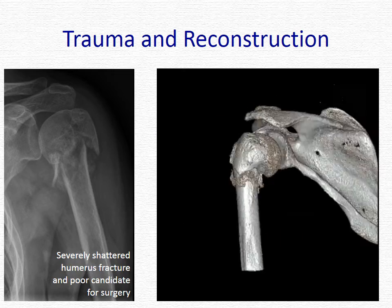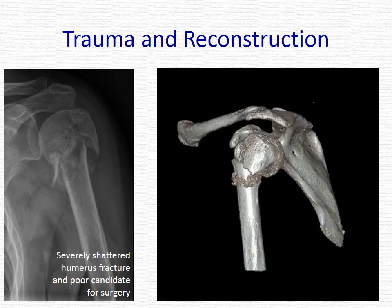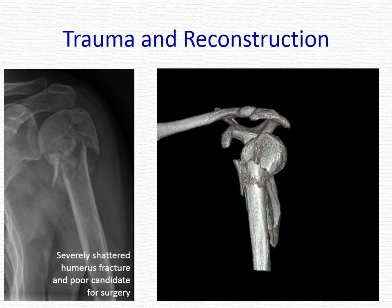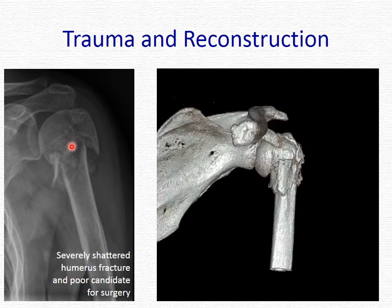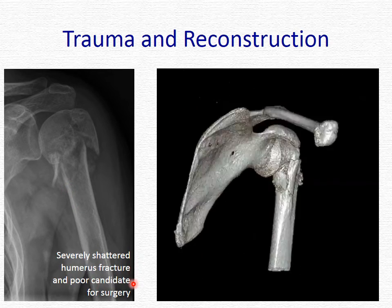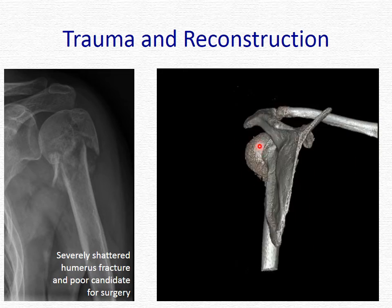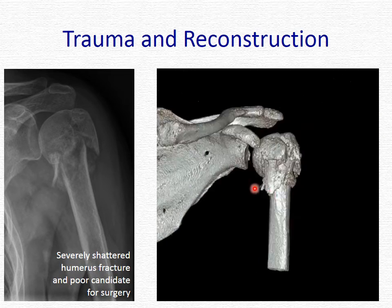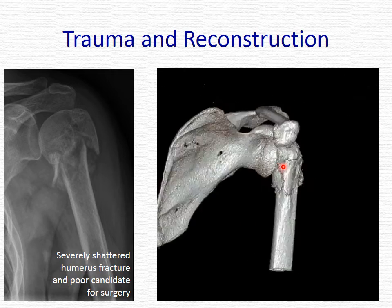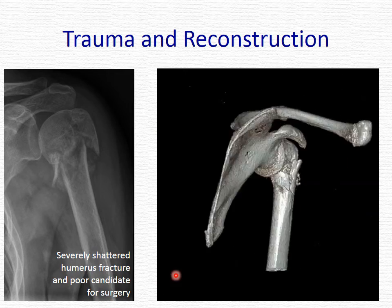Let's talk a little bit about the application of this technology in a traumatic case that required reconstruction of the humerus. This was a comminuted fracture of the proximal humerus — completely broken up and severely shattered, and therefore a poor candidate for surgery. You can see how in this three-dimensional reconstruction, this kind of fracture would do very poorly with plate fixation because the screws would have no purchase.